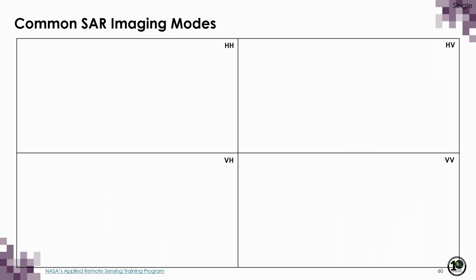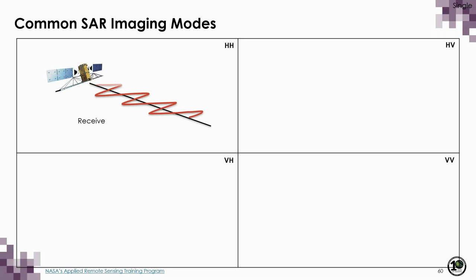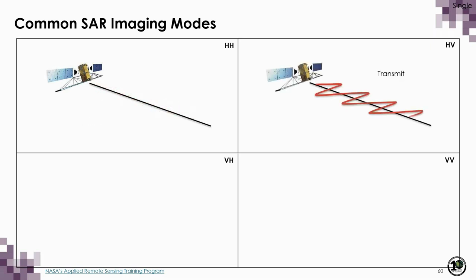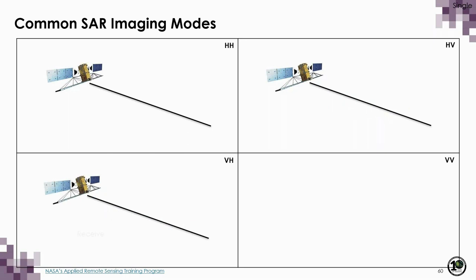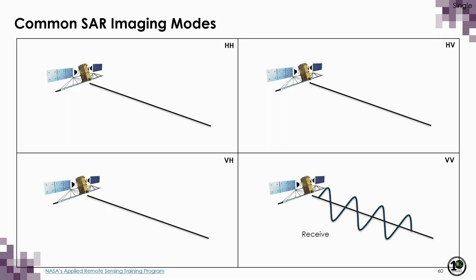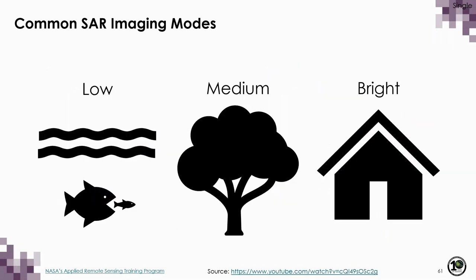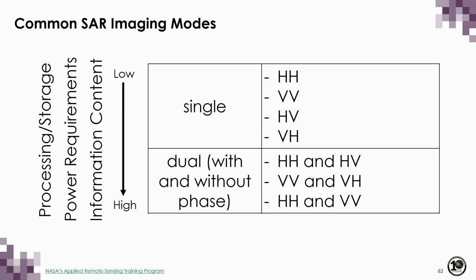With linear horizontal and linear vertical, there are four possible transmit-receive combinations: HH (transmit and receive linear horizontal), HV (transmit linear horizontal, receive linear vertical), VH (transmit linear vertical, receive linear horizontal), and VV (transmit and receive linear vertical). With just one polarization, this provides only one-dimensional information about the surface — varying degrees of brightness — which can distinguish certain targets but collecting more than one polarization is advantageous.